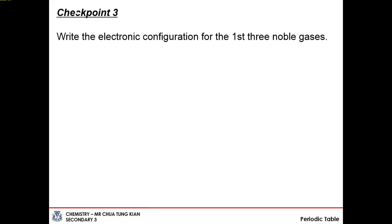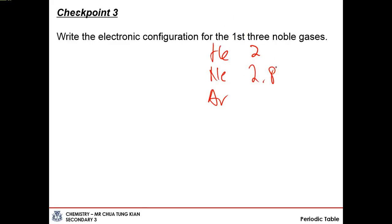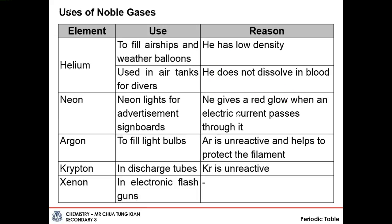The first three noble gases and their electronic configurations: helium has 2 electrons, so configuration is simply 2; neon has 10 electrons, configuration is 2.8; argon has 18 electrons, configuration is 2.8.8. Noble gases are unreactive due to their stable electronic configuration — either duplet or octet. Some uses of noble gases, especially helium and argon, are important to remember as they may appear in exam questions.